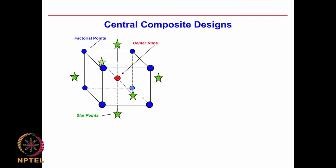The first design we looked at is called the Central Composite Design. In a 2^3 design — that means 3 factors, 2 levels — you have a cube with 8 experiments (2x2x2). We add 1 extra experiment at the center, then 6 experiments away from the faces of the cube. Since a cube has 6 faces, you get 6 additional experiments.